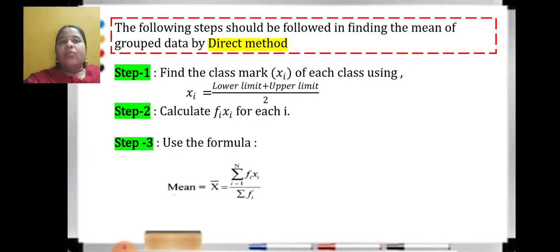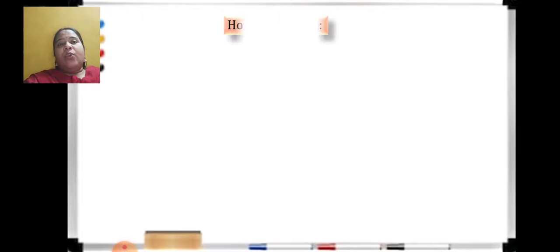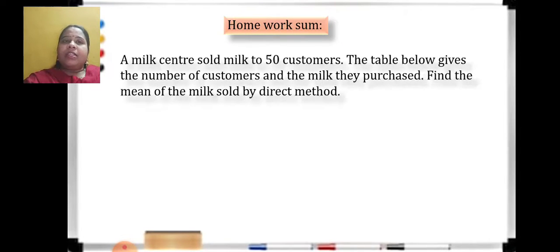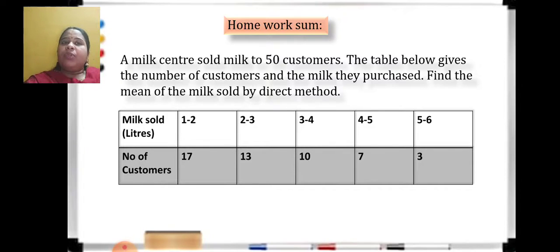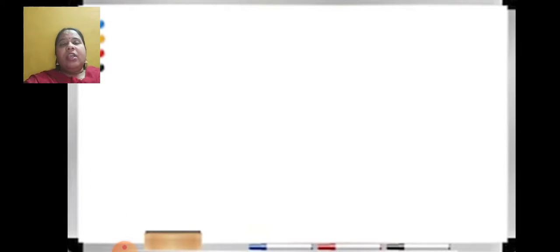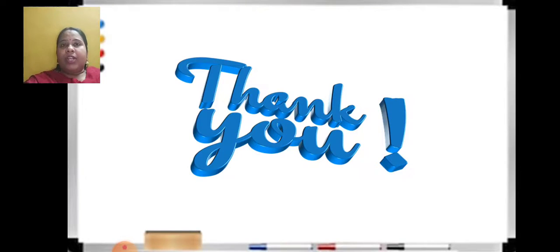Please make a note of all these important steps. I hope you have understood direct method. For homework, do the third sum from the practice set — it is exactly similar. From the practice set, you only have to do the first and the third sum; the remaining sums are omitted. With this I come to the end of this session. Remaining parts will continue in the next session. Thank you.